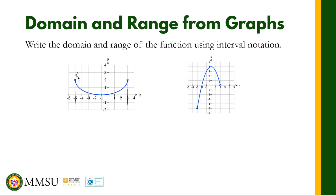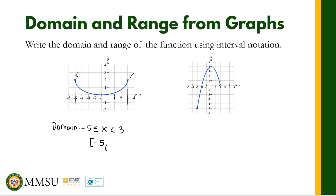Our domain is from negative 5 to positive 3. Since we have a solid circle here, negative 5 is included. But here we have an open circle, which means positive 3 is not included. So therefore, our domain is X is greater than or equal to negative 5 but less than positive 3 — that's using set-builder notation. We can also write this using interval notation as negative 5 to positive 3, open bracket.